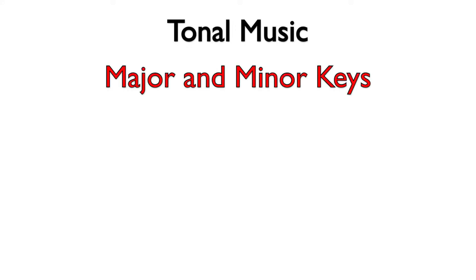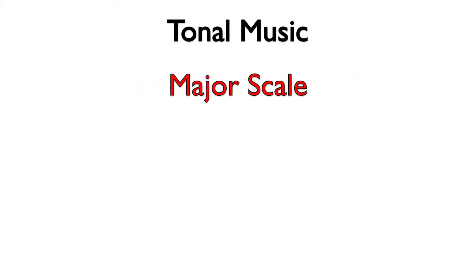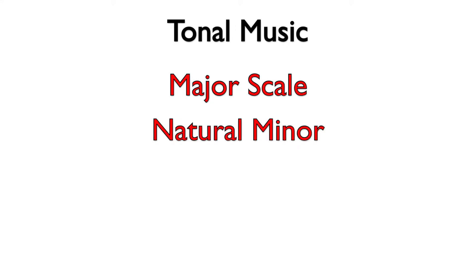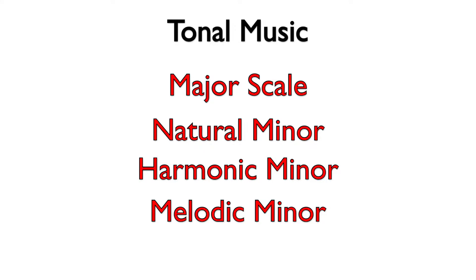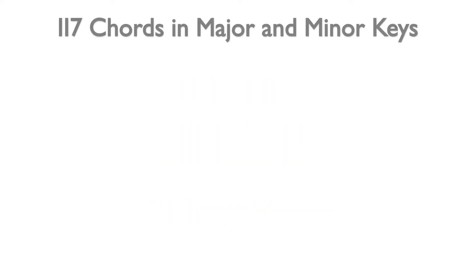Tonal music from the common practice period utilizes the sound of major and minor keys. Therefore, chords can be drawn from the major scale and three types of minor scales: natural, harmonic, and melodic minor. In this video, we will focus on the possible two-seven chords in major and minor keys.